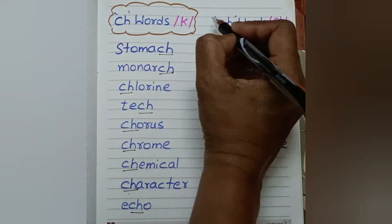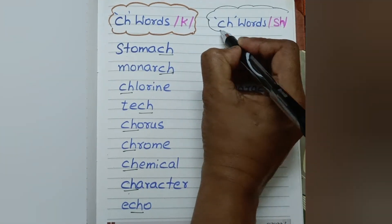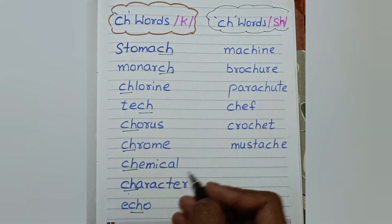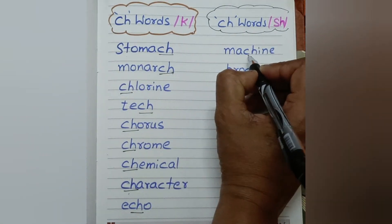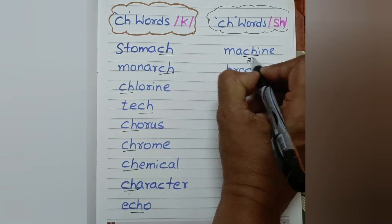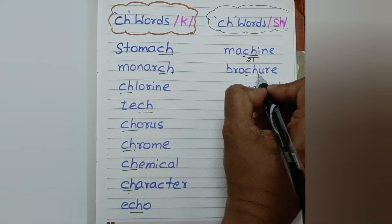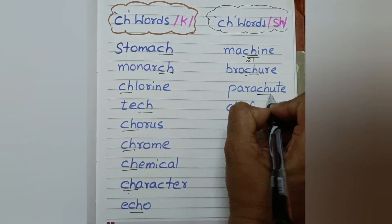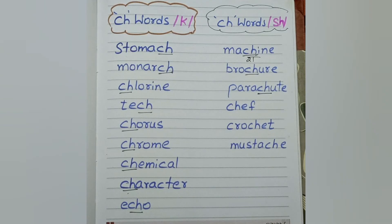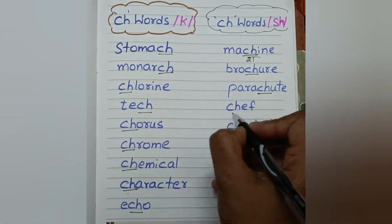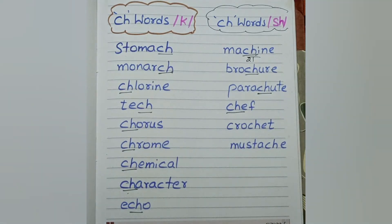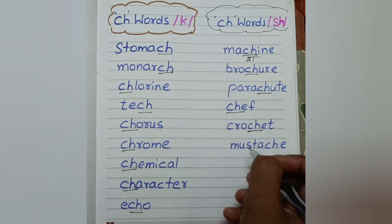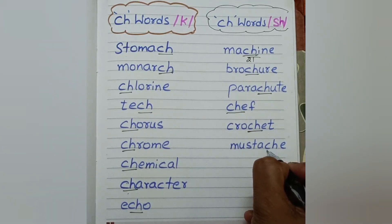And this is the list of SH sound. CH sound is SH, like in machine, brochure, parachute, chef, crochet, and mustache.